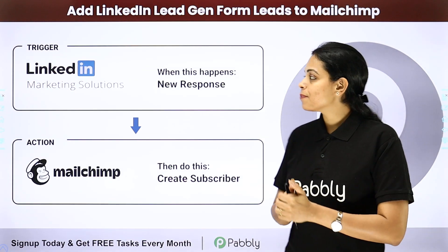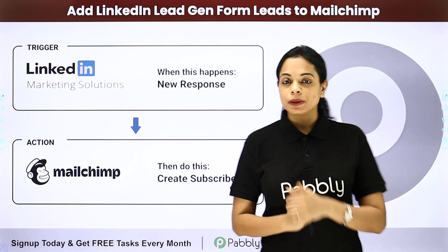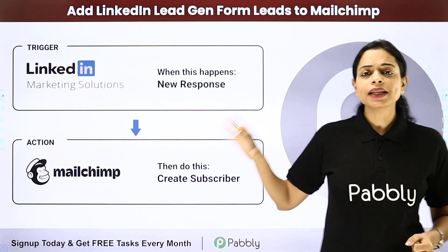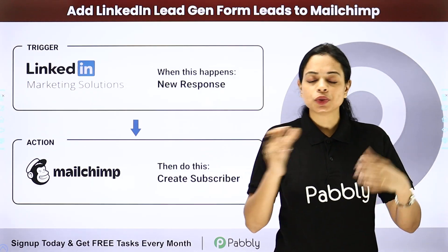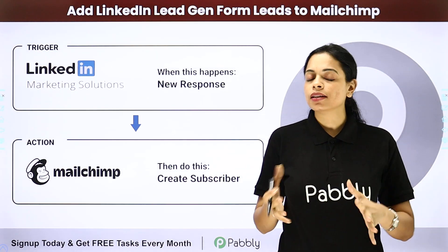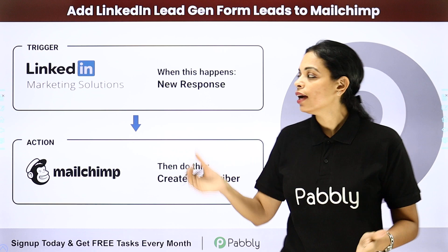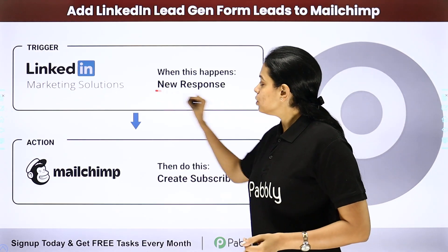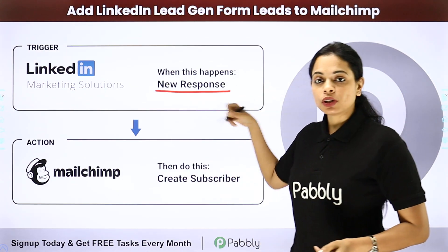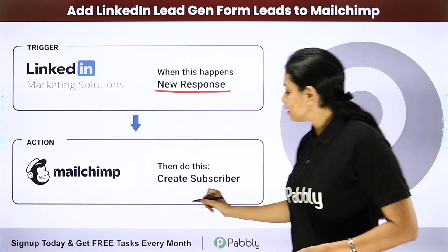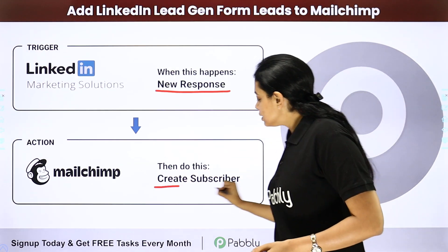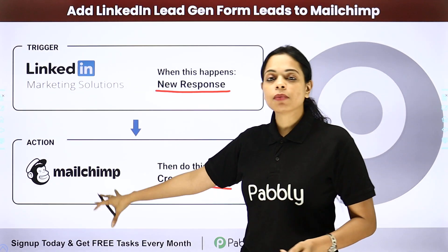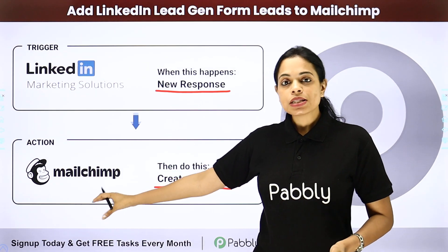The last example we have here is MailChimp. MailChimp is an email marketing tool. So if you are using MailChimp or MailerLite, etc., you want that every time you receive a new response, automatically a subscriber should be created in your email marketing tool.